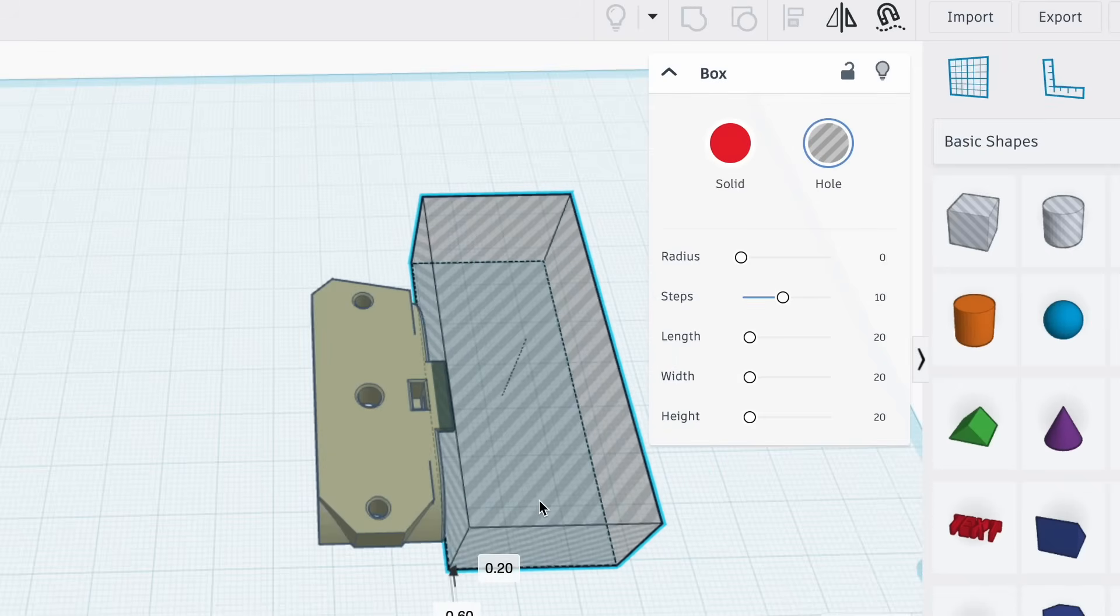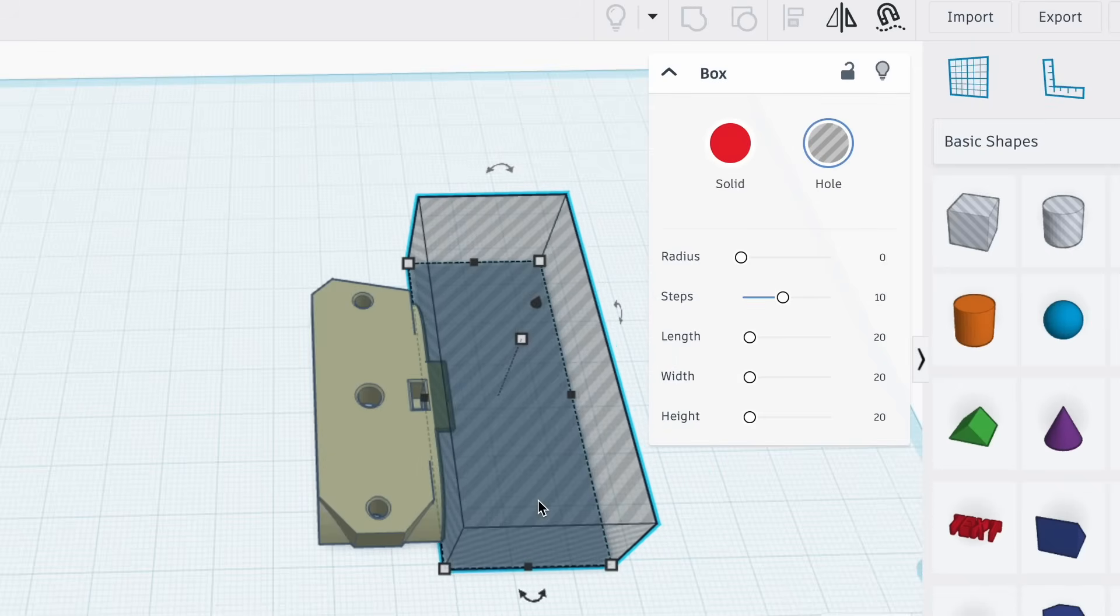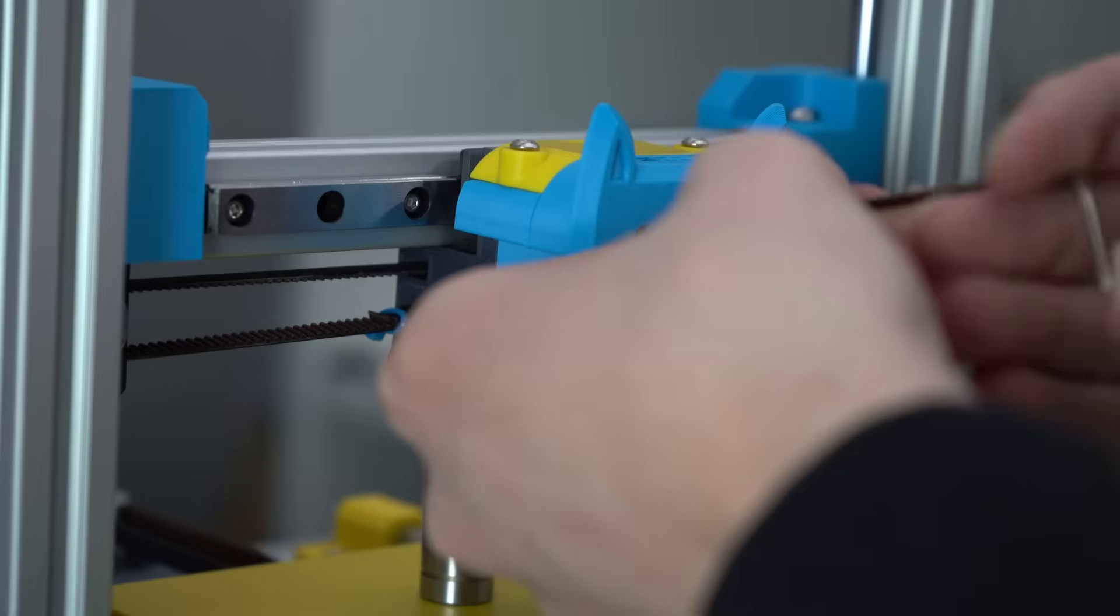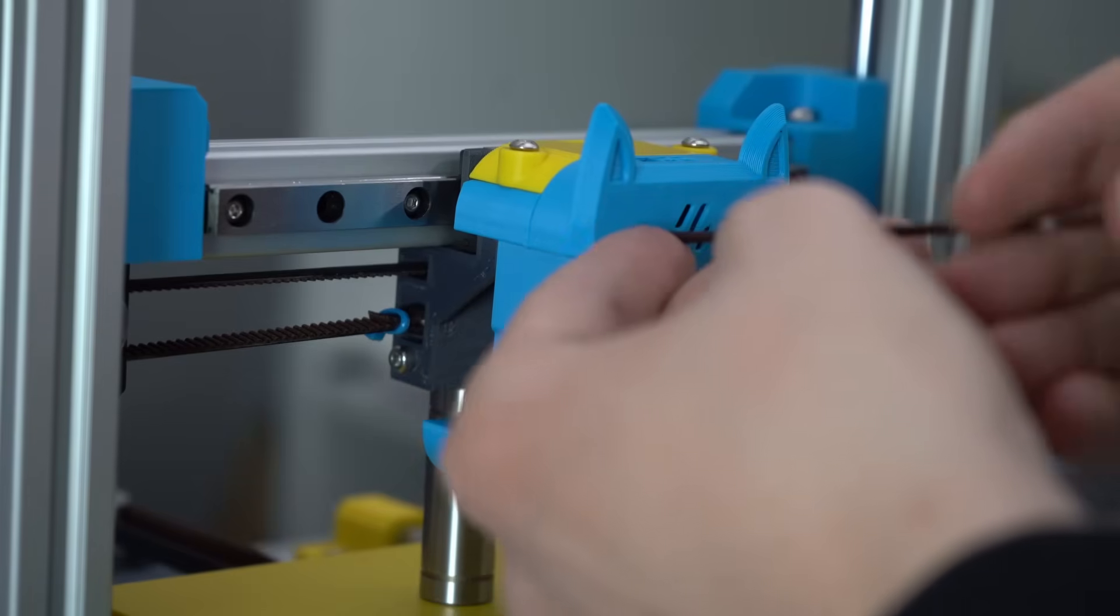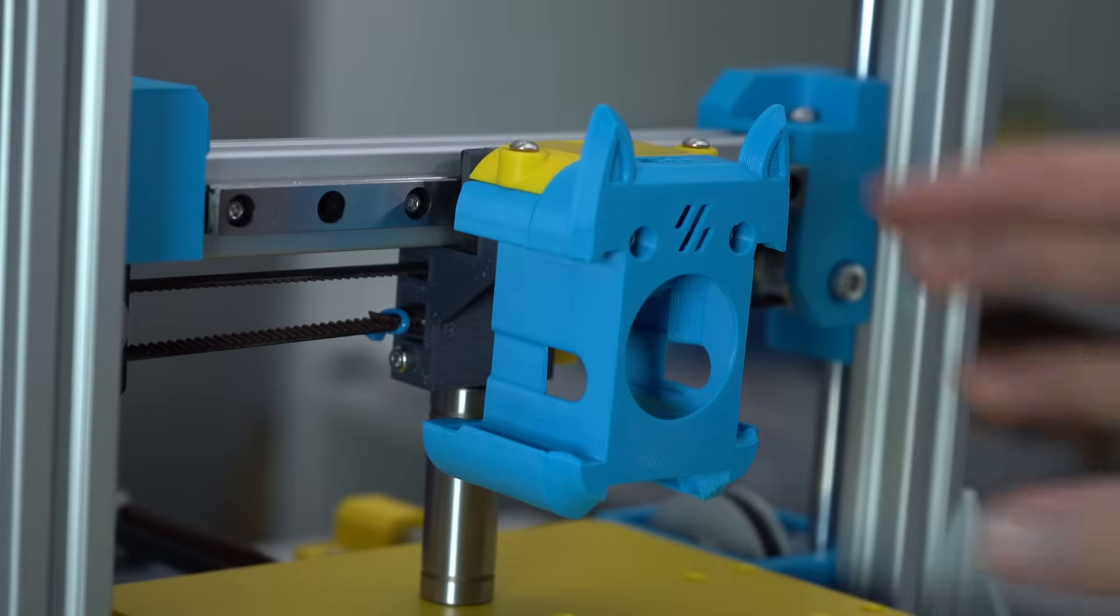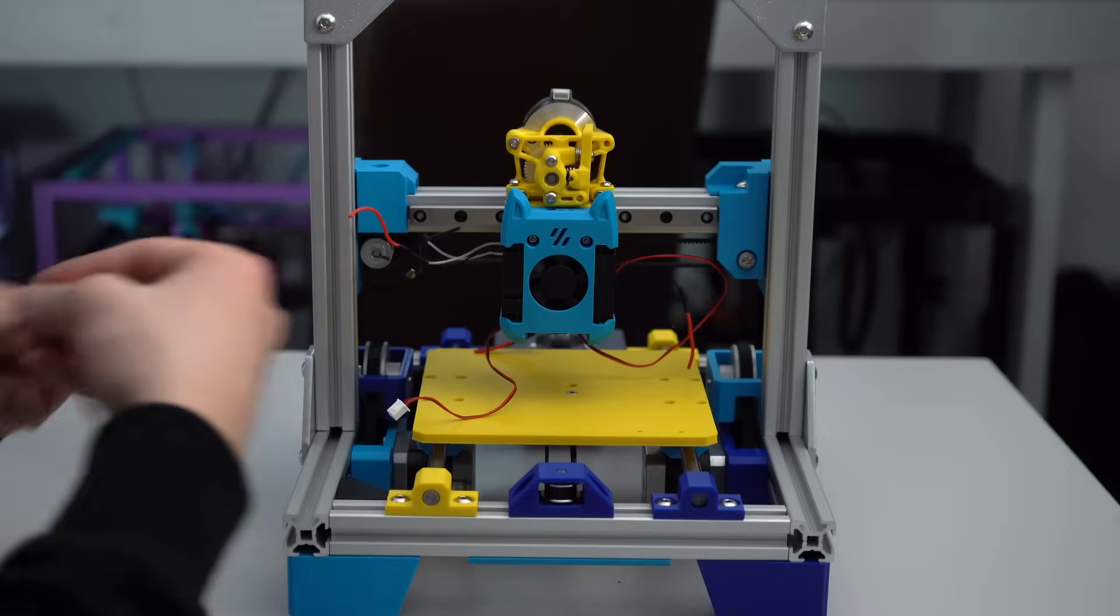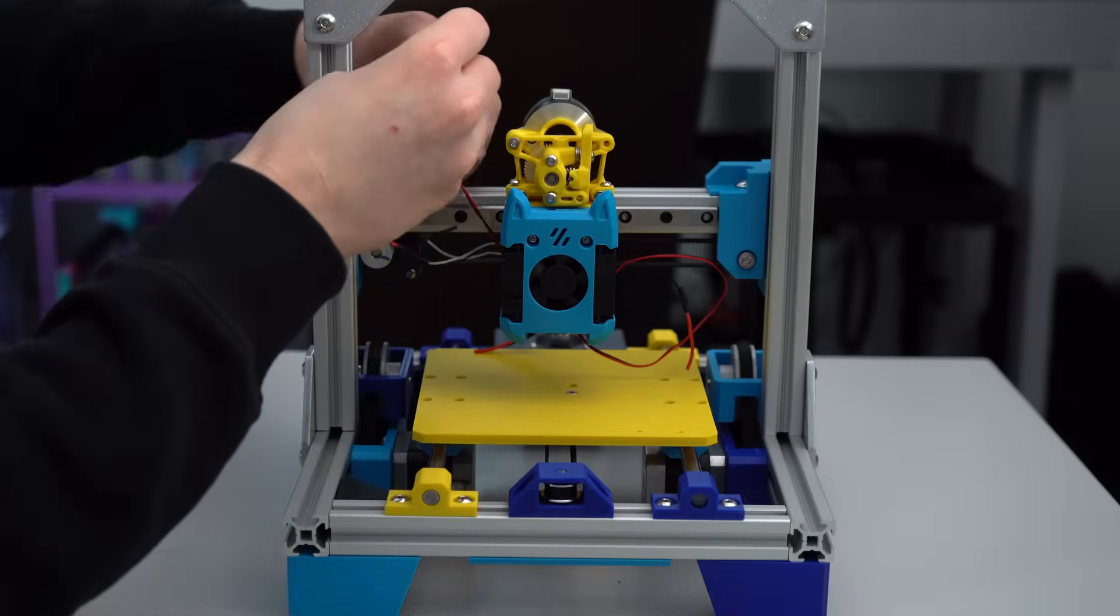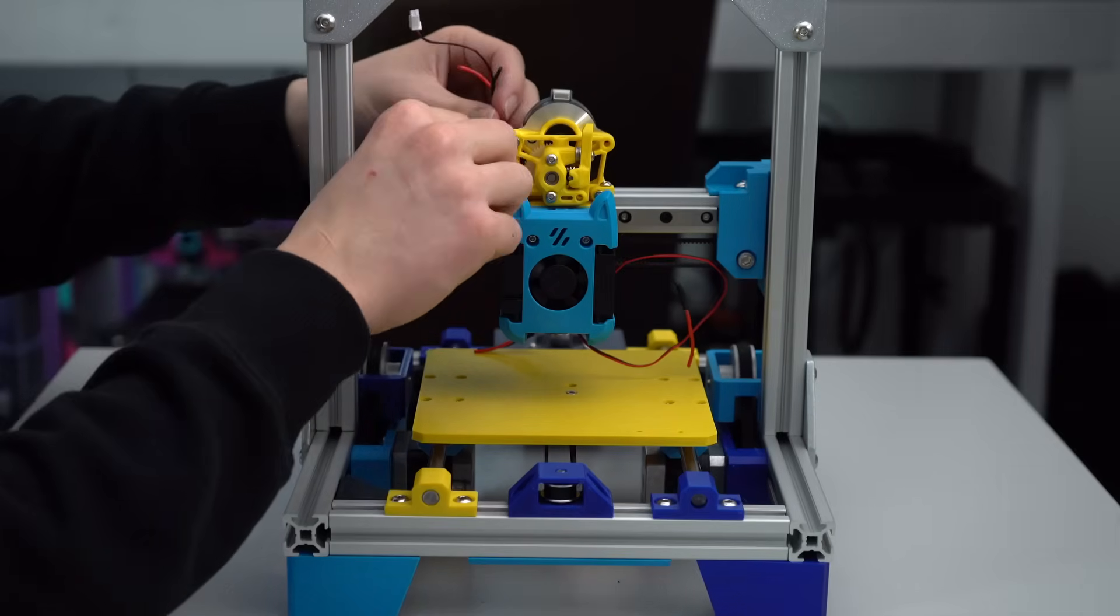The stock carriage only lets you attach the toolhead at two points, but this isn't as big of a deal on a bedslinger compared to something like a CoreXY. And that's really all the tips and tricks that I have for you here. I'm going to be running a Bambu hotend with the Sherpa Mini, and I think that's a pretty reasonable choice, given the kinds of speeds that you can expect from a printer like this.